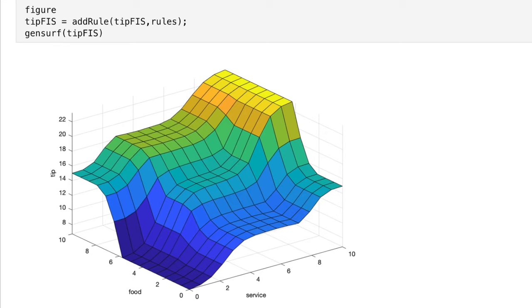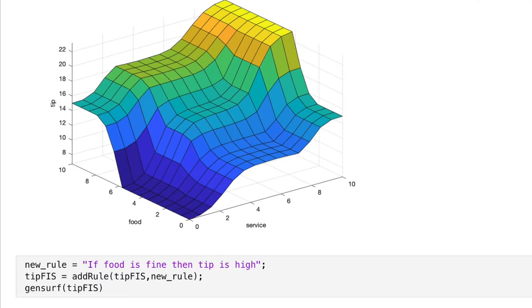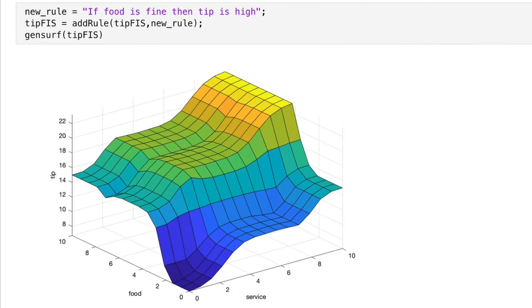Now, let's say that I want to change this system by adding a fourth rule that says that if food is fine, then tip is high. Basically I'm saying that the food is the most important thing, and if it's fine, then I'm happy to tip a high amount, no matter what the service was like. And if I add that rule to my inference system and generate the new surface, you can see that the mapping has changed. The center portion around the fine food area has been raised, just as we would have expected. And it's this easy and intuitive creation and manipulation of fuzzy inference systems that make them so powerful.